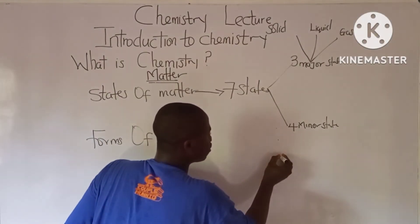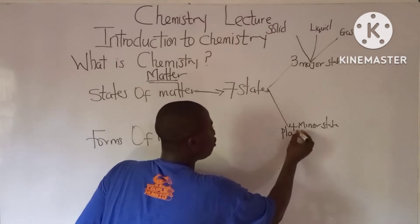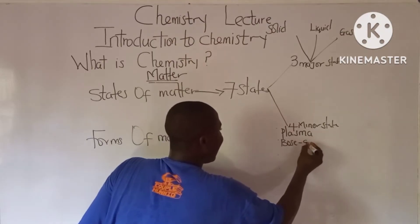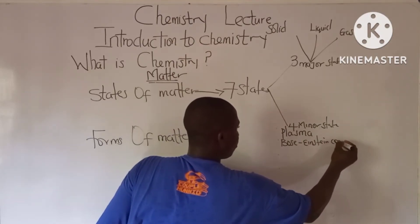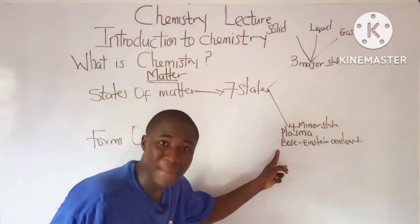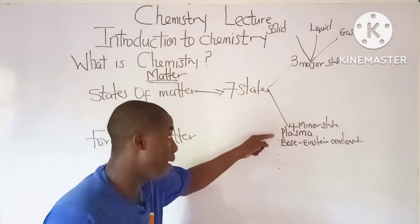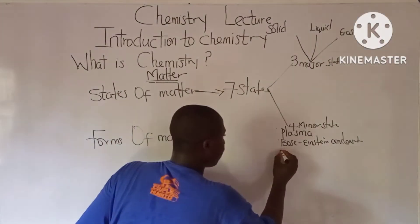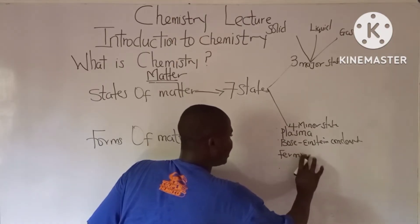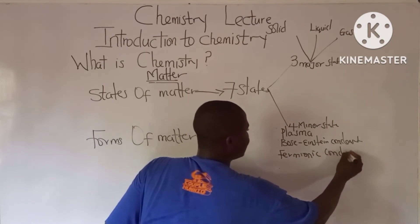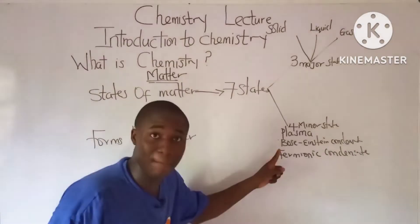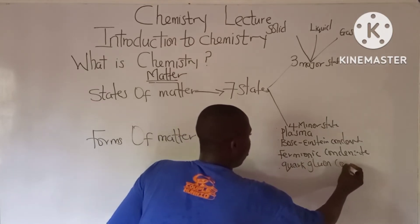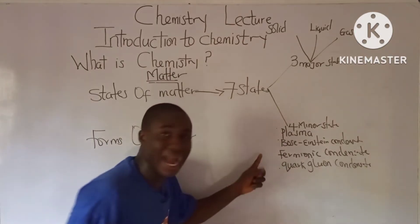The four minor states of matter are: plasma, Bose-Einstein condensate, fermionic condensate, and quark-gluon condensate. These are the four minor states of matter.